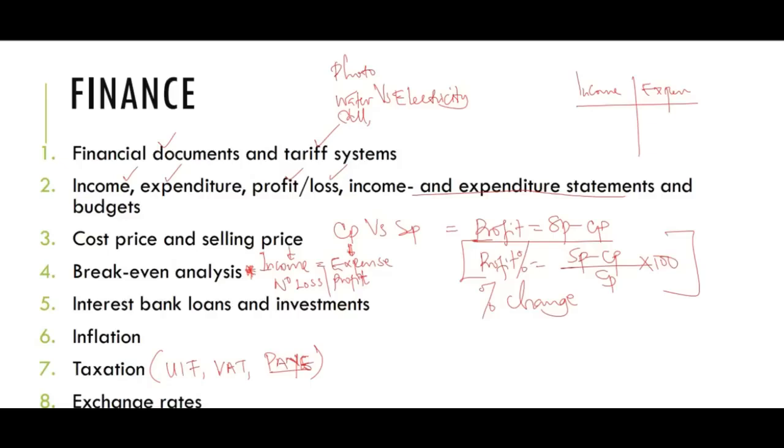Then we shall look at interest, bank loans and investments. The loans, we looked at the home loan, whereby we take the monthly repayment always equal to the loan amount divided by a thousand times the factor. Investment, we have what we call the compound interest and the simple interest.